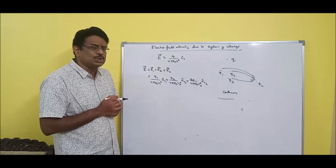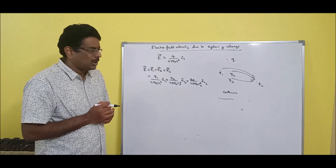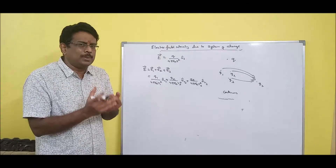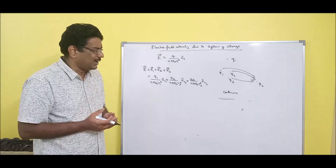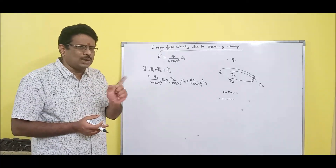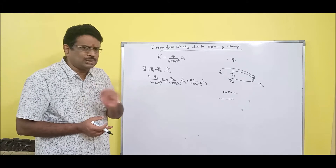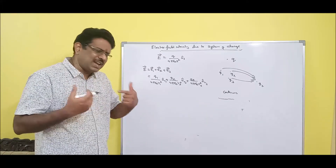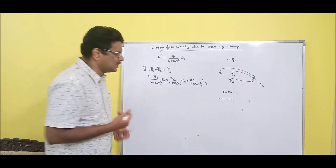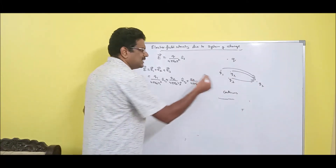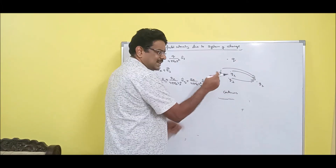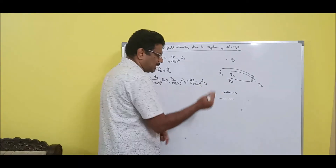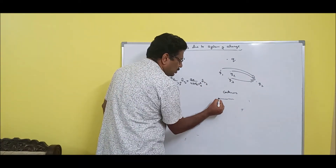Under that situation we handle the problem differently. Q1, Q2, Q3 is discrete — meaning separate. Continuous means charges are distributed together without separation. So what should we do?